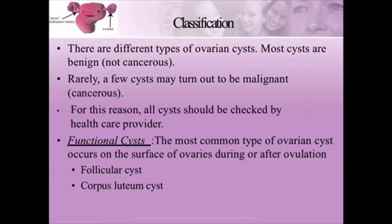Functional cysts include follicular cysts and corpus luteum cysts. Follicles are present in the ovaries and mature over time. Normally, the follicle releases and then degenerates. But if it does not degenerate and continues to grow, a follicular cyst forms. When the follicle does degenerate, it becomes the corpus luteum. If the corpus luteum forms a cyst, that is called a corpus luteum cyst.